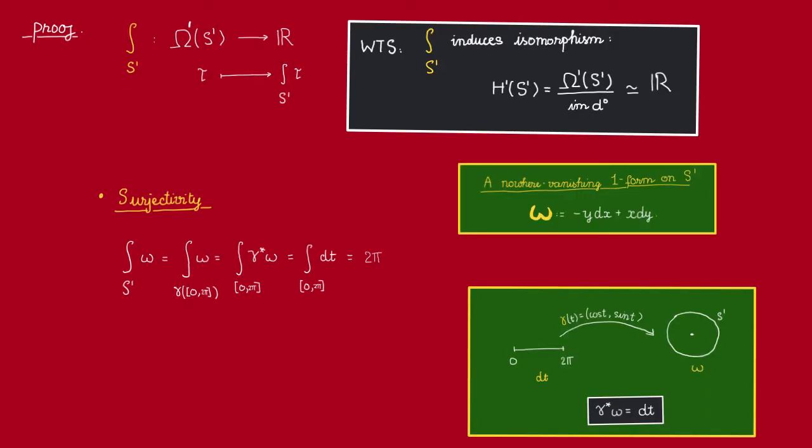In other words, we just need to find some one form omega such that the integral of omega over S^1 is not zero. For this, let's remember our discussion on orientation and integration. Remember back then, we have constructed a nowhere vanishing one form on S^1. Where does this one form come from?